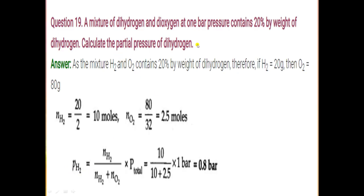The mole fraction formula is: moles of hydrogen divided by total moles of all gases. Moles of hydrogen = 20/2 = 10 moles. Moles of dioxygen = 80/32 = 2.5 moles. Putting the values in the formula, the partial pressure of dihydrogen comes out equal to 0.8 bar.